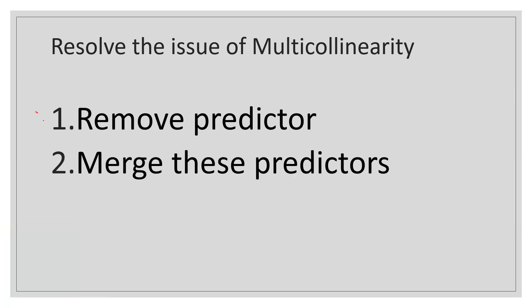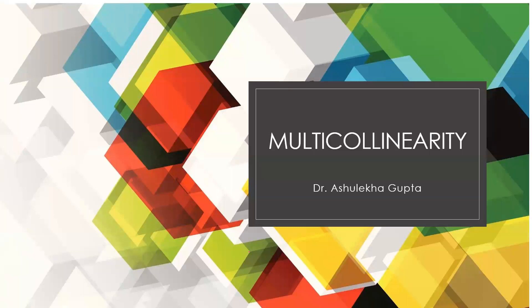The second option is to merge the predictors that are showing multicollinearity. You can merge them — there would be one latent construct you can create through these predictors — or you can merge both these predictors together. So removing the predictor or merging the predictors are the two solutions to get rid of the multicollinearity issue. I hope this video is helpful — thanks for watching.